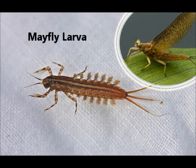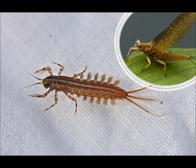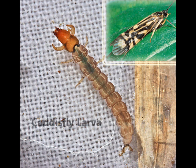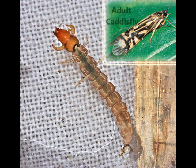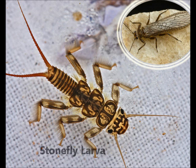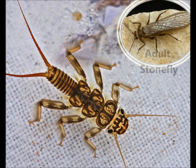Mayflies, stoneflies, and caddisflies — those are the Ephemeroptera, Plecoptera, and Trichoptera orders. Those bugs tend to be very sensitive to water quality and we tend to see them quite frequently. Those are the ones that you want to see in a healthy stream.